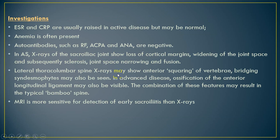How do we investigate patients with ankylosing spondylitis? The majority will have increased inflammatory markers during active disease, but normal results do not exclude the disease. Anemia of chronic inflammation is common. Rheumatoid factor, anti-cyclic citrullinated peptide antibody, and anti-nuclear antibody should all be negative.